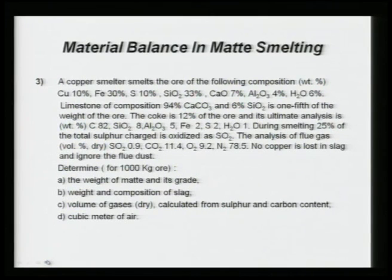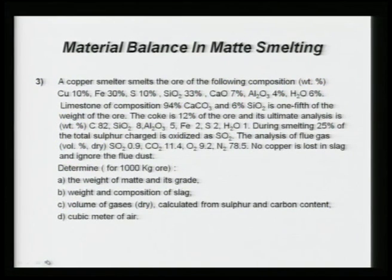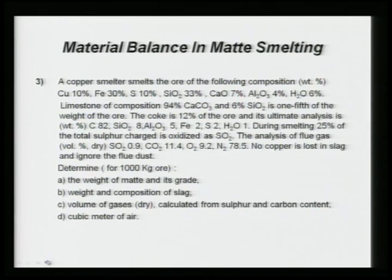Problem 3: a copper smelter smelts the ore of the following composition — copper, iron, sulfur, SiO₂, calcium oxide, Al₂O₃, H₂O — all compositions are given. Limestone of composition 94 percent calcium carbonate and 6 percent SiO₂ is used and it is one fifth of the weight of the ore.